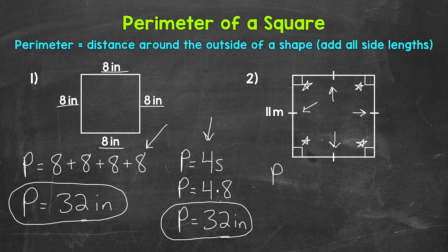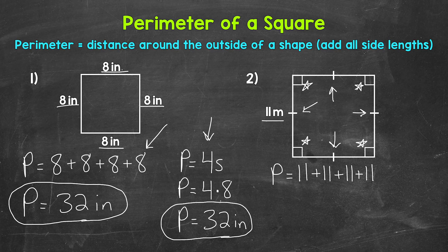As far as perimeter, let's start by adding all of the sides. Perimeter equals 11 plus 11 plus 11 plus 11. 11 plus 11 is 22, plus 11 is 33, plus 11 is 44. So the perimeter is 44 meters.